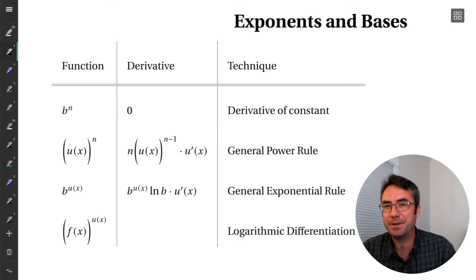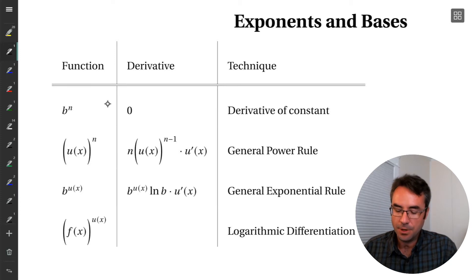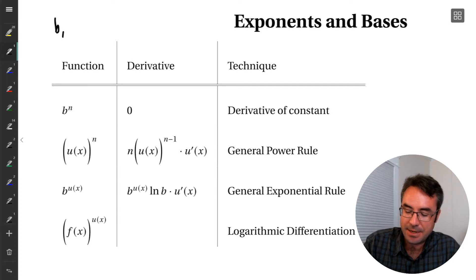As we saw in that last example, it was kind of an unusual function. So let's just look at all the different possibilities for terms where we have both an exponent and a base term. We're going to look at all the different possibilities here. And for this discussion, b and n are constants.